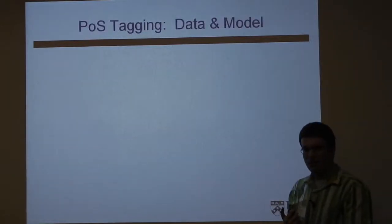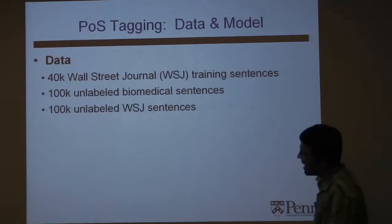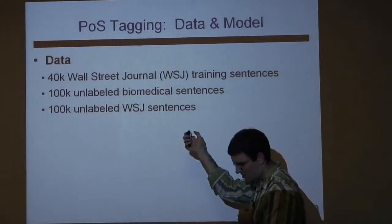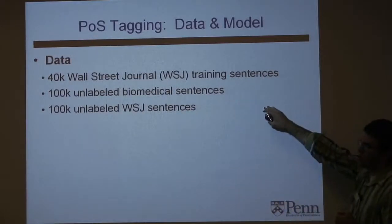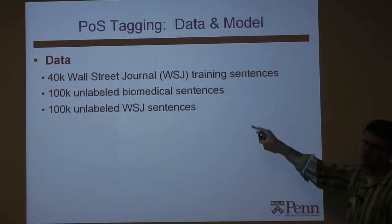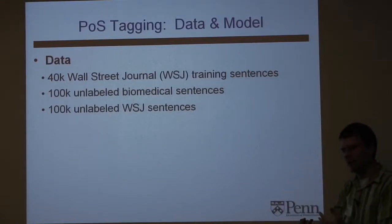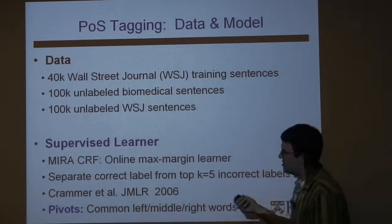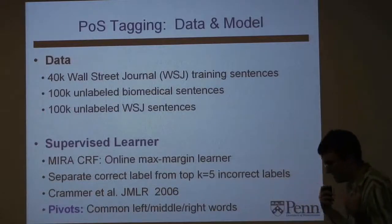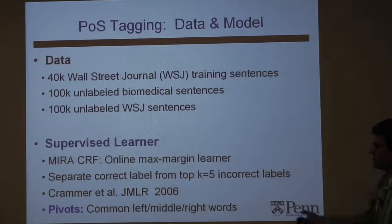The other task is part-of-speech tagging. The data is quite a bit larger: a million labeled words of Wall Street Journal text. We add two or three million words of unlabeled text from the Wall Street Journal and from MEDLINE. The task is to train a tagger on the Wall Street Journal and test it on MEDLINE. We use as our supervised learner what I'll call MIRA-CRF, where you separate the best label from the top highest-scoring incorrect labels by a margin. For pivots, we use common left, middle, and right words across domains in a three-word window.